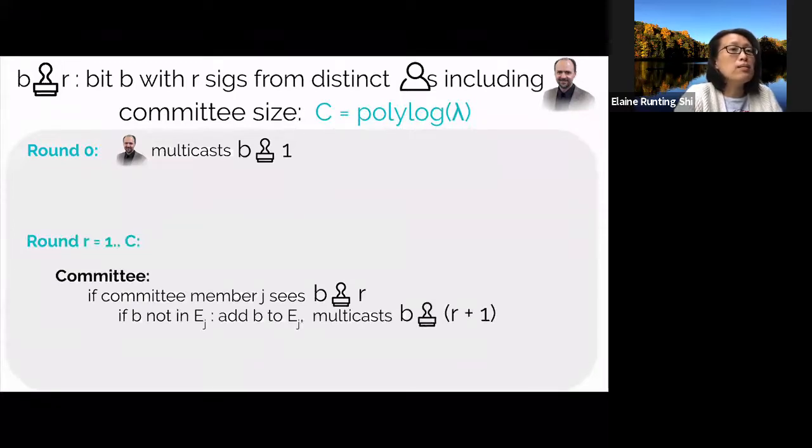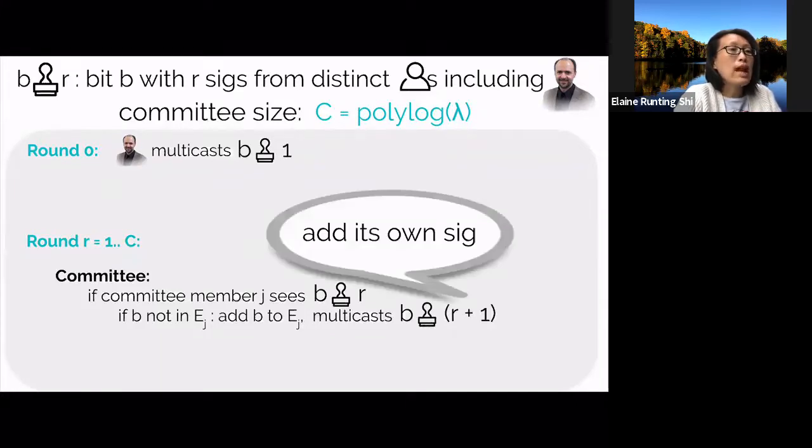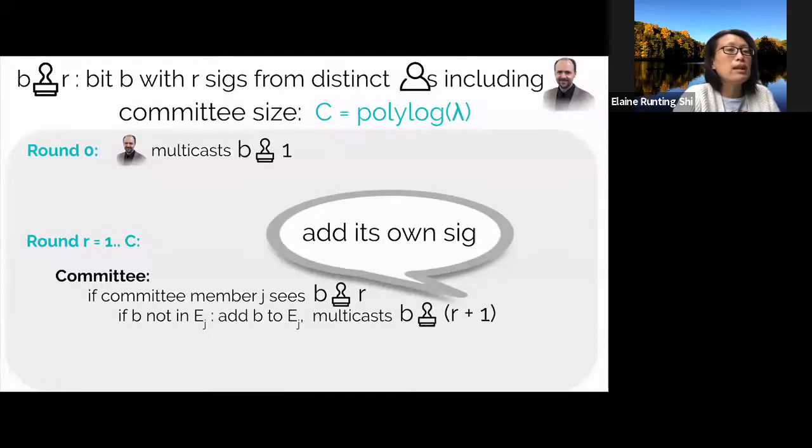Now, every player maintains what's called an extracted set. And player j's extracted set is denoted E_j. The extracted set maintains the set of bits the player believes Aguilos to have sent. In the next C rounds, where C is the committee size, the committee members perform the following. In the r-th round, if player j observes an r badge of votes on something b, and b is not in the player's extracted set E_j, it will add b to its extracted set. It'll sign a signature on b and propagate an r plus one batch of votes on b to everyone else.